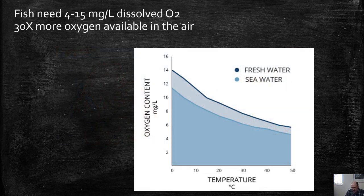Let's start with gills, kind of the outgroup to the land animals. Fish need about 4 to 15 milligrams of oxygen per liter in the water to survive, depending on the species. Keep in mind there's at least 30 times that much oxygen available in the atmosphere. Also, as you increase the temperature of the water, there's less and less oxygen available. In cool water you hold more oxygen, but in warm water you have a lot less. So fish have much less oxygen available to them than a land animal does.